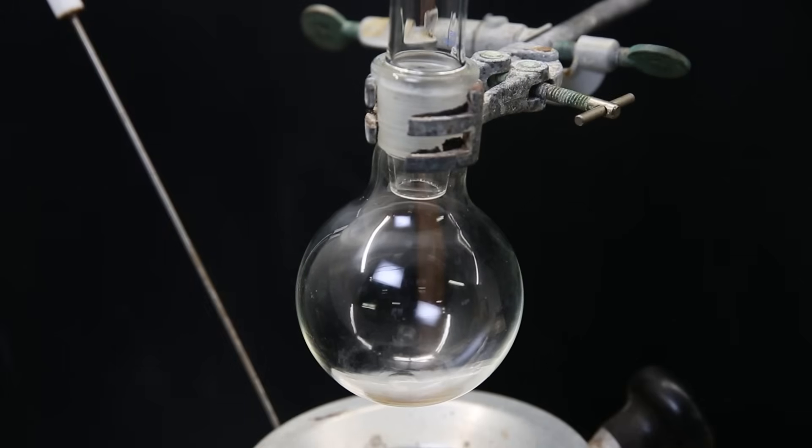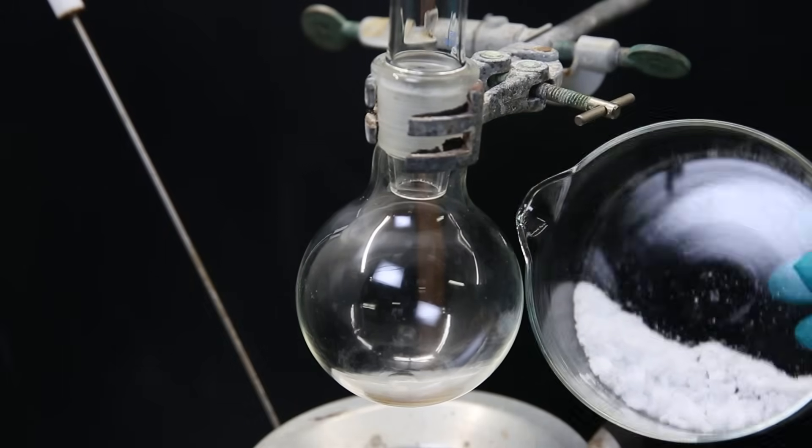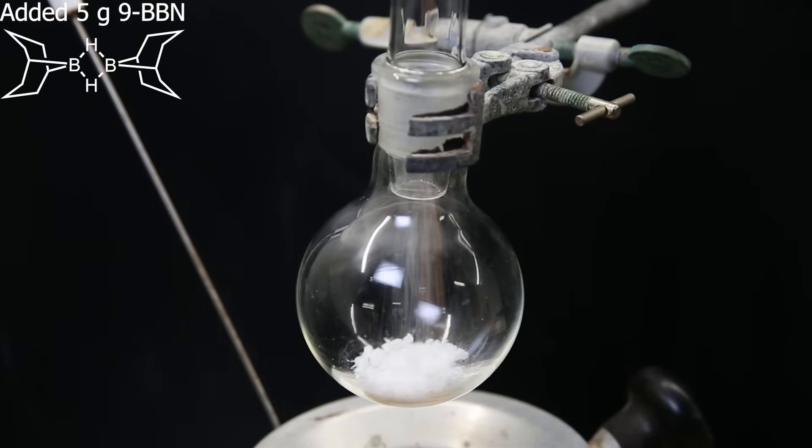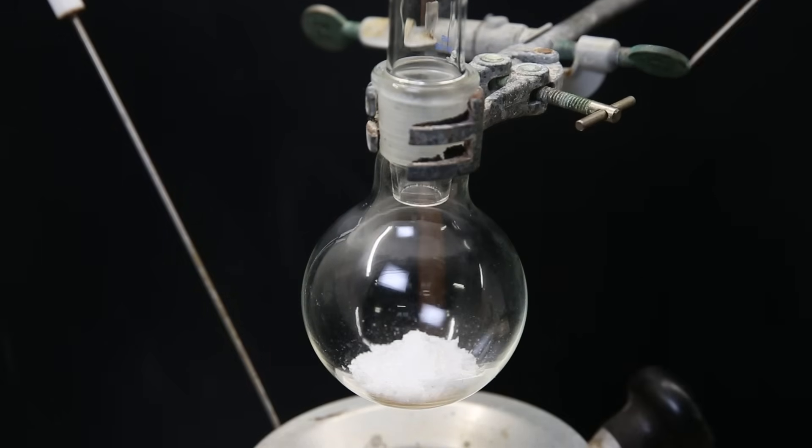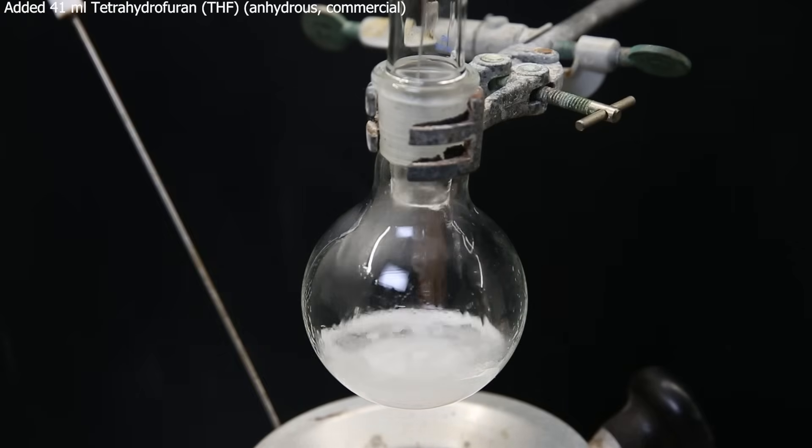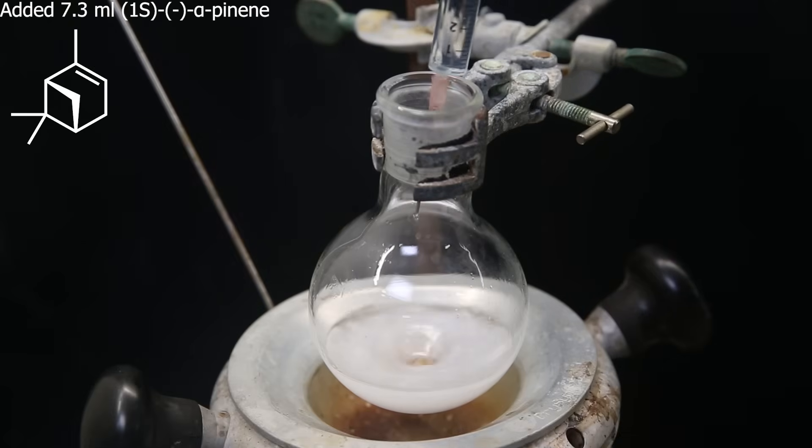So I set up a flask and attach a funnel. I store 3.7 grams of the 9BBN and will use the rest for this reaction. So I add 5 grams of the 9BBN, and then add 41 mls of anhydrous THF. I start stirring, and then add 7.3 mls of 1S-Levo-alpha-pinene.